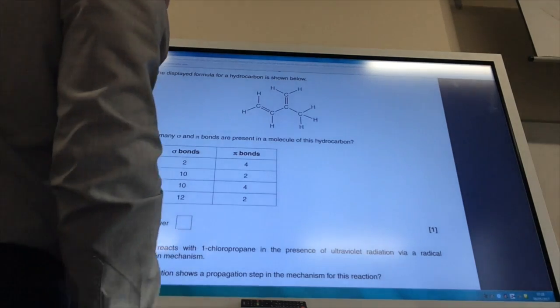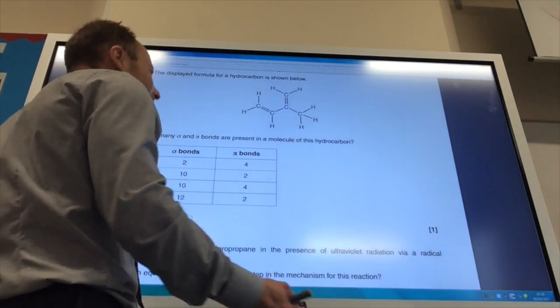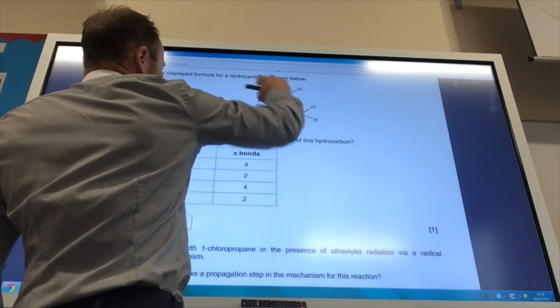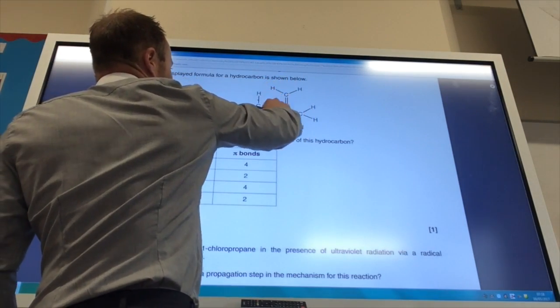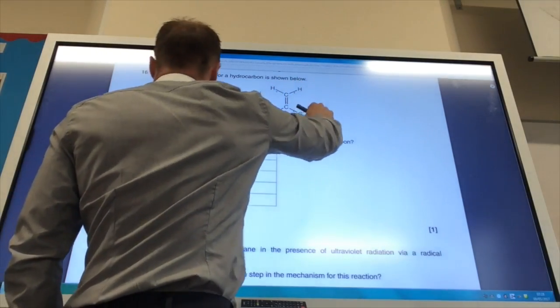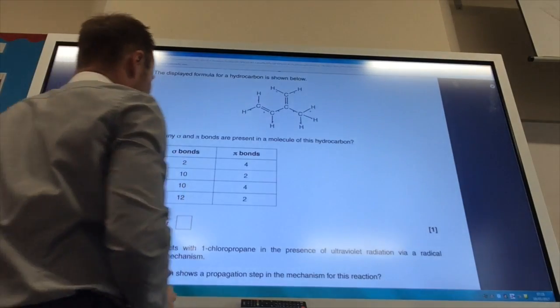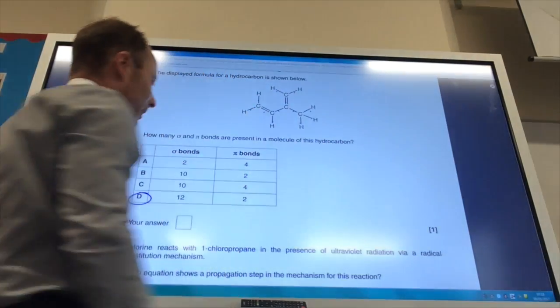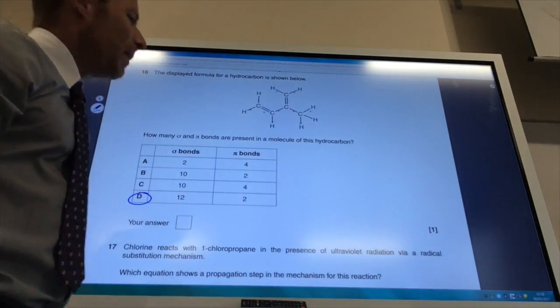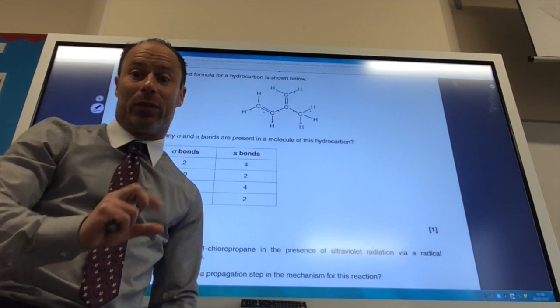This is Count the Bonds. How many sigma and how many pi bonds do I have? Let's do sigma first of all: 1, 2, 3, 4, 5, 6, 7, 8, 9, 10, 11, 12. So the answer is D. And there's my two pi bonds there. Remember, a double bond consists of a sigma bond and a pi bond.